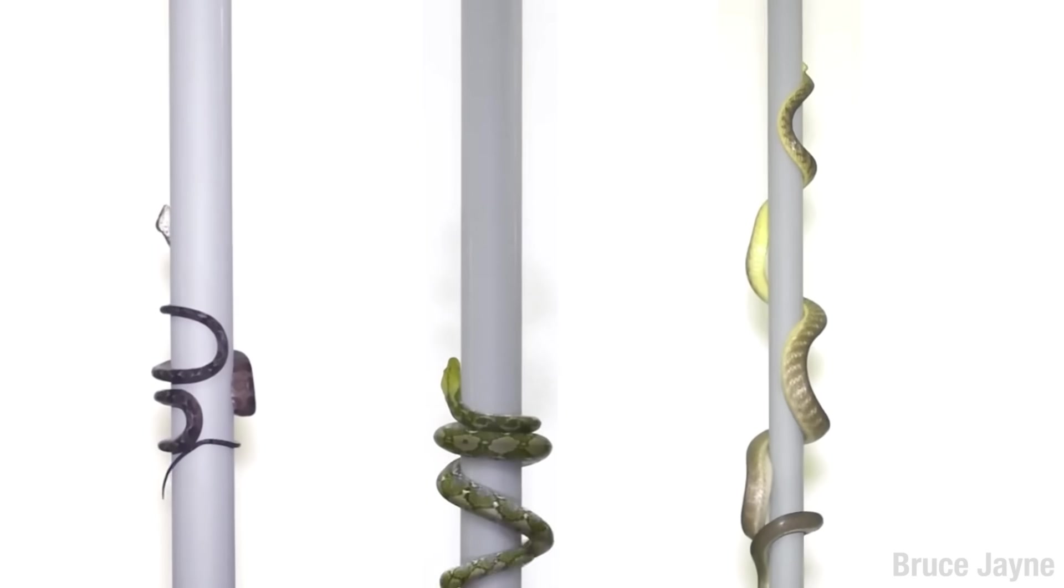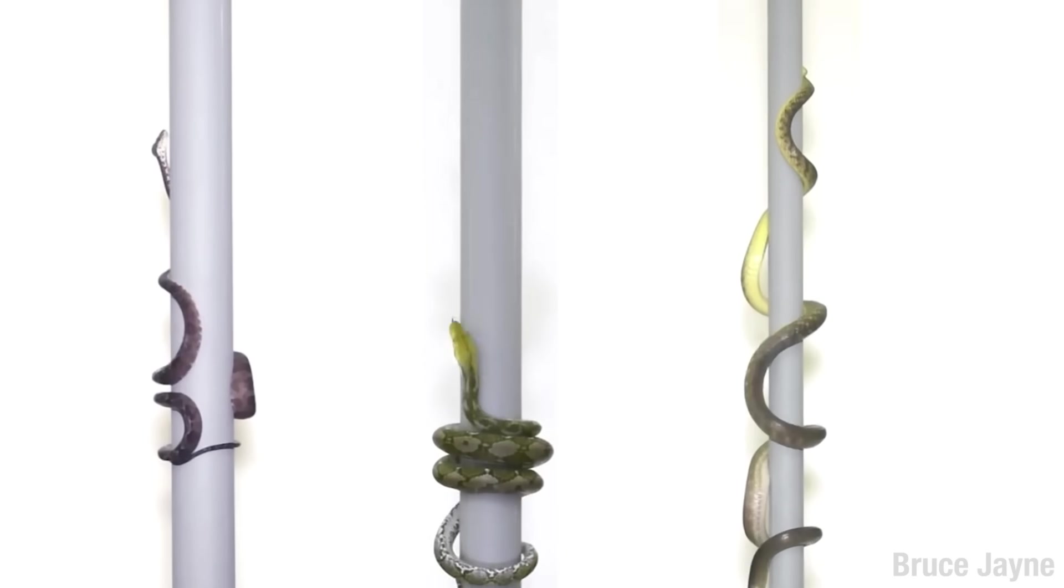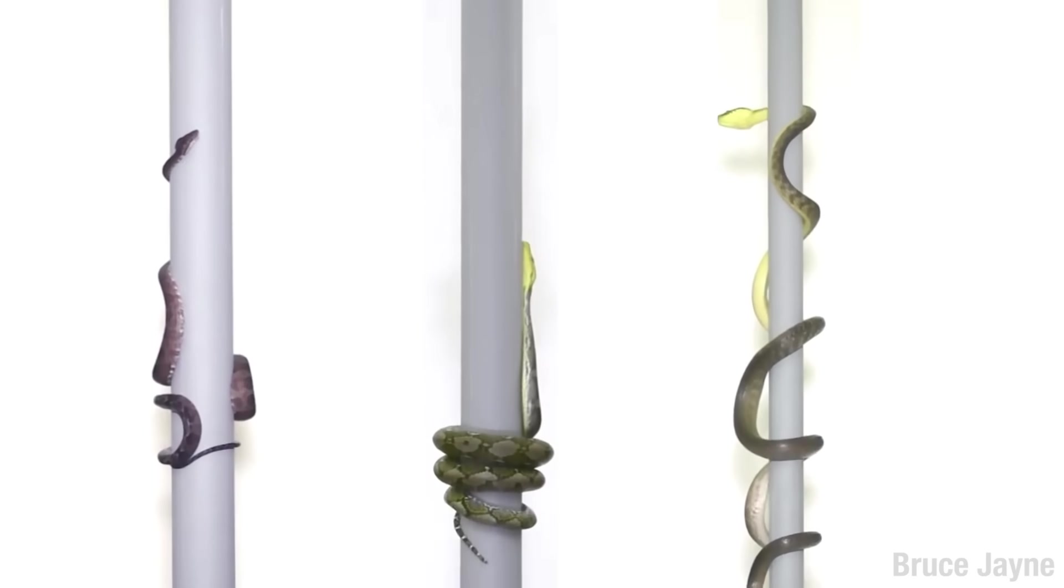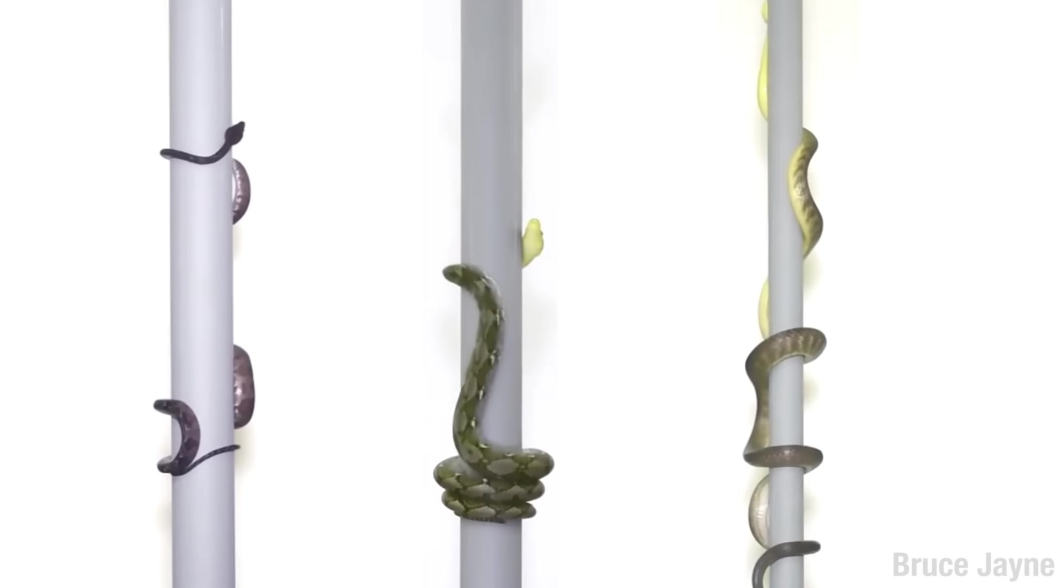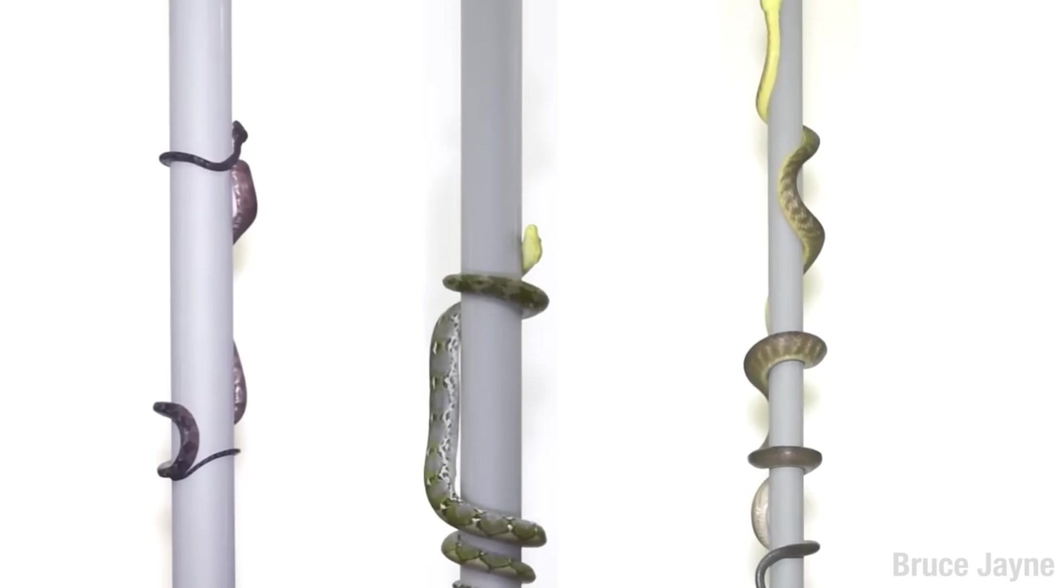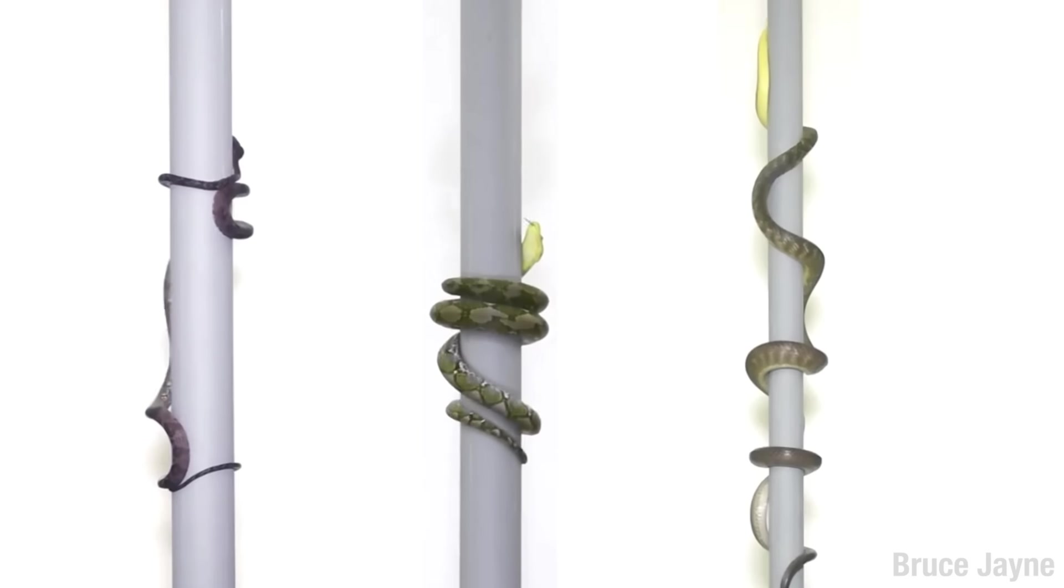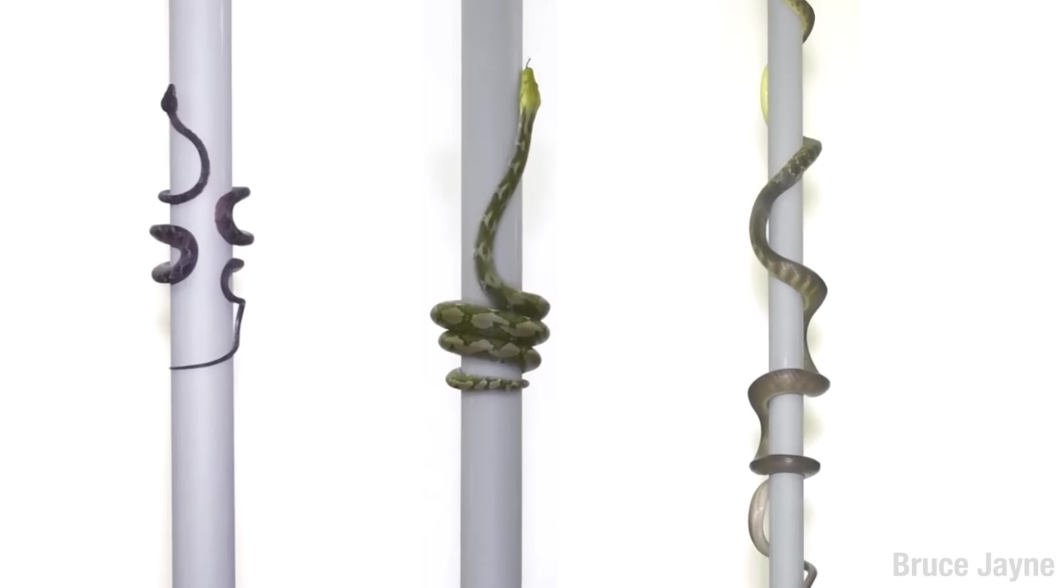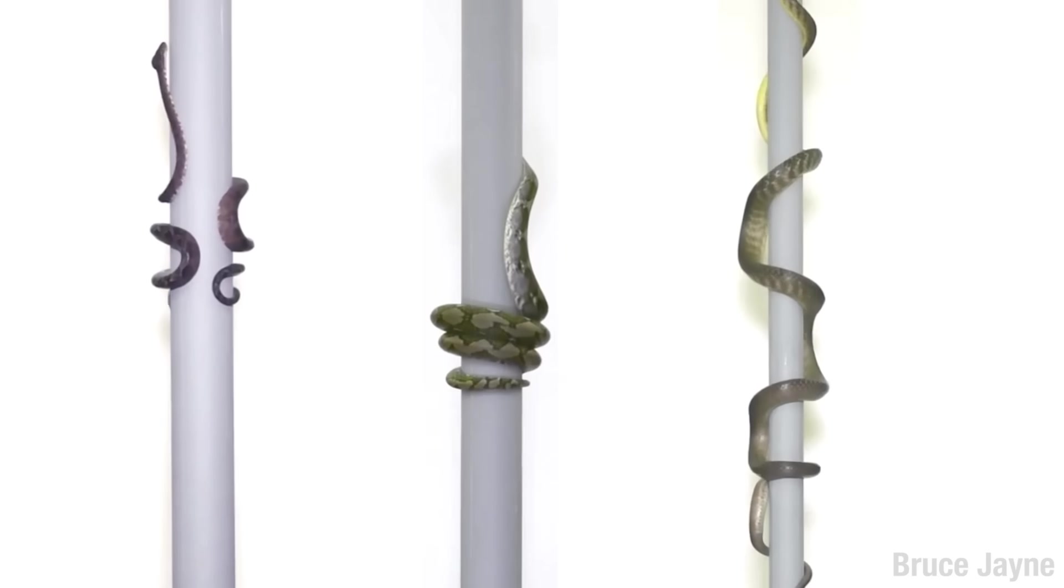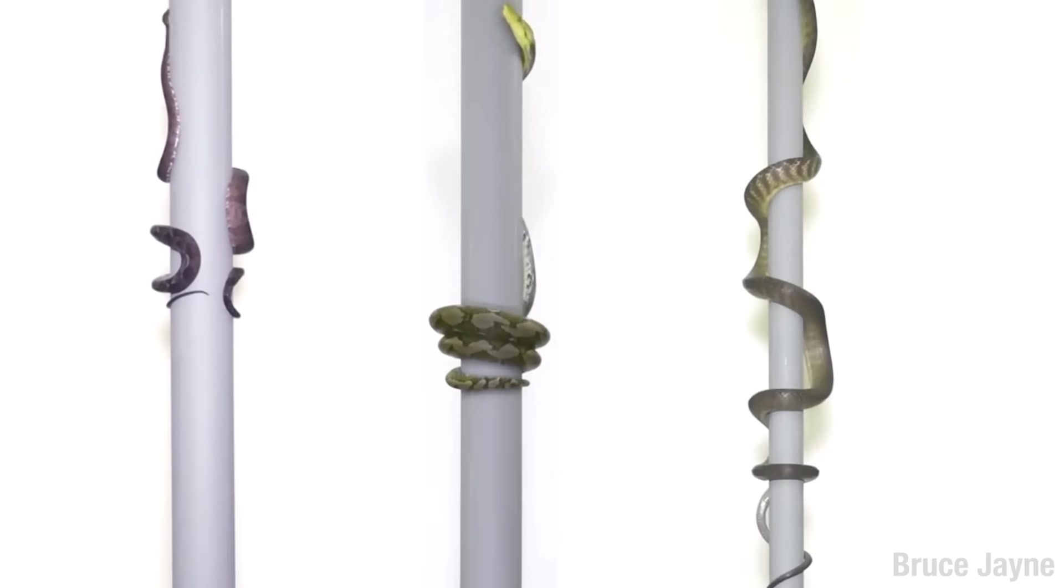But if you take all the nubbins away, well, a snake gotta do what a snake gotta do. You got the reticulated python in the middle doing the ringy dingy. Good solid grippage like a firm handshake. Amazon tree boa on the left does the loopy loopy. Leaves a nice space in case you want to avoid a branch or a spider. And then the brown tree snake on the right just showing off again. You're so good at climbing. Sorry.